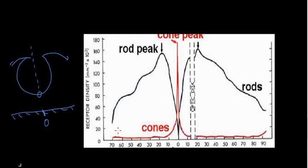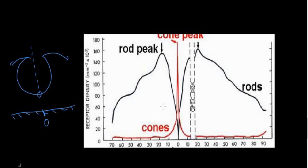Overall there are fewer cones than rods, so the red cone line stays lower than the rod line across the retina. At one specific point, there are no rods or cones at all — this is where the optic nerve enters, and this is where the blind spot is.